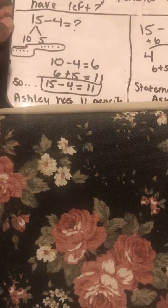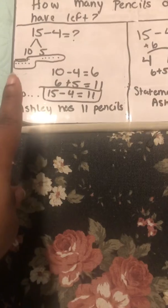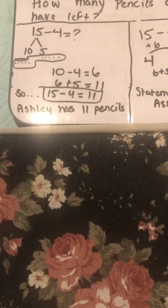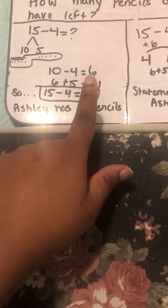If you used the take from 10 method, your problem should look like this: you break 15 apart and make a 10-frame. In your 10-frame you are taking away 4, which is the part, from the 10. You end up with 10 take away 4 equals 6 — so you have 6 left on this side.